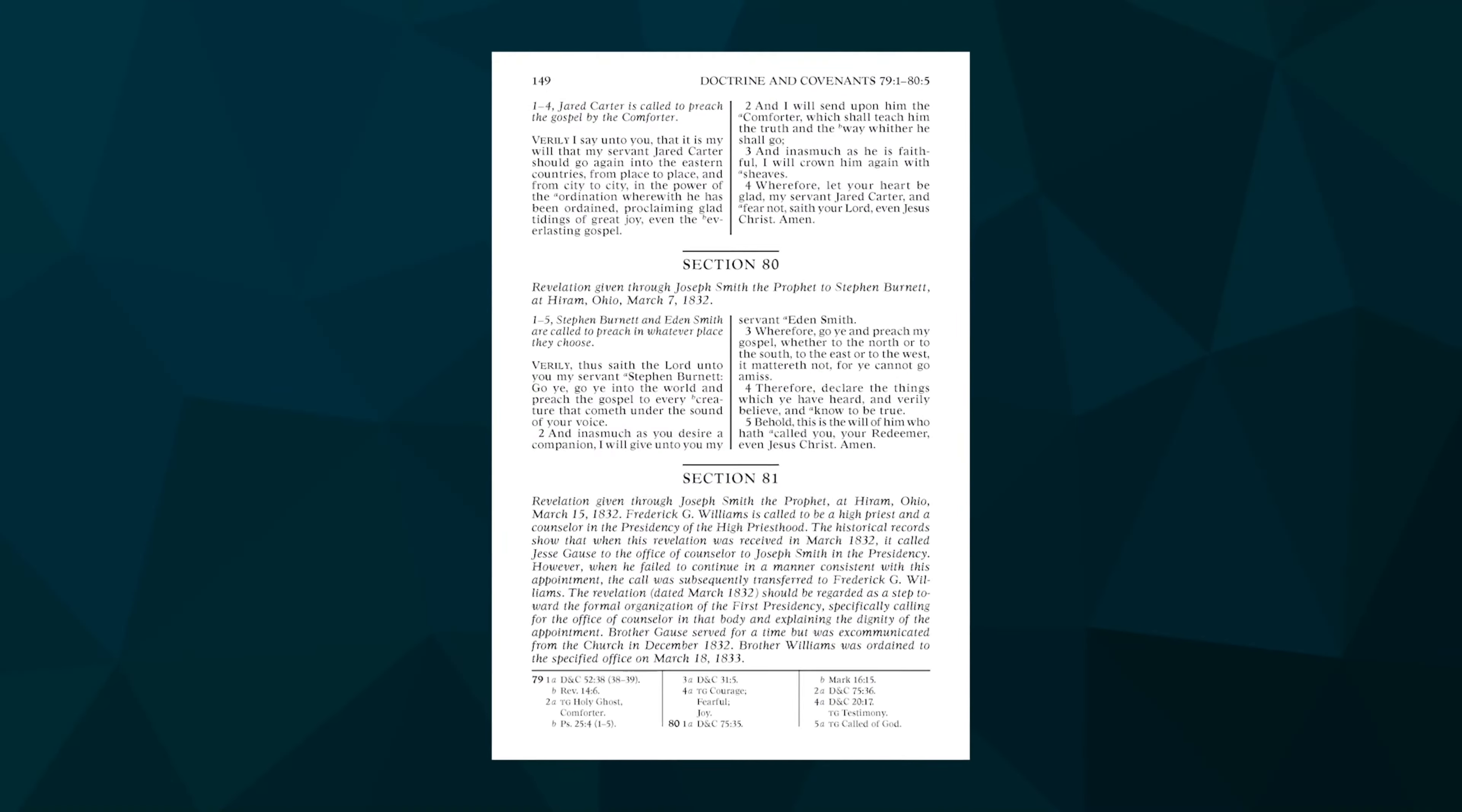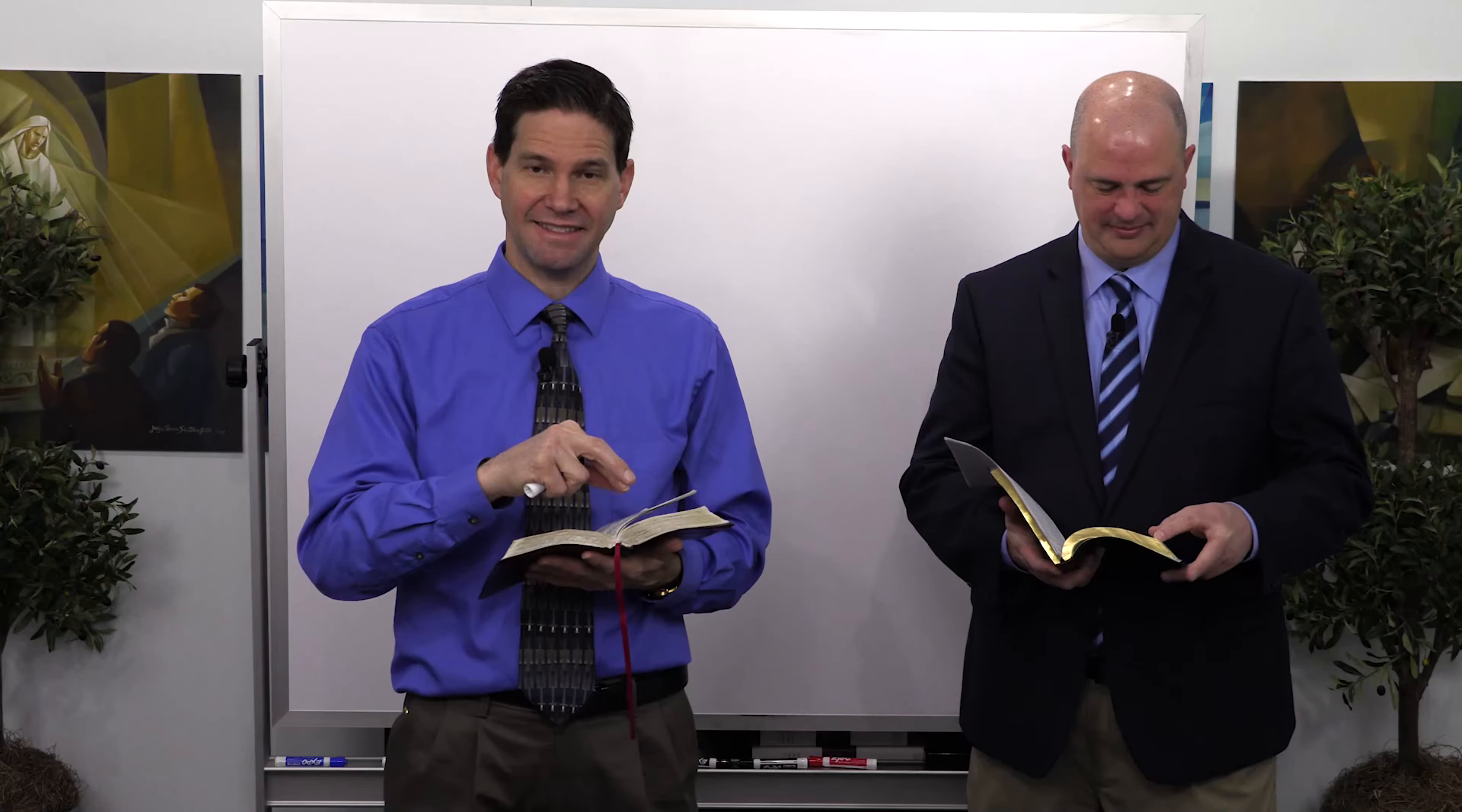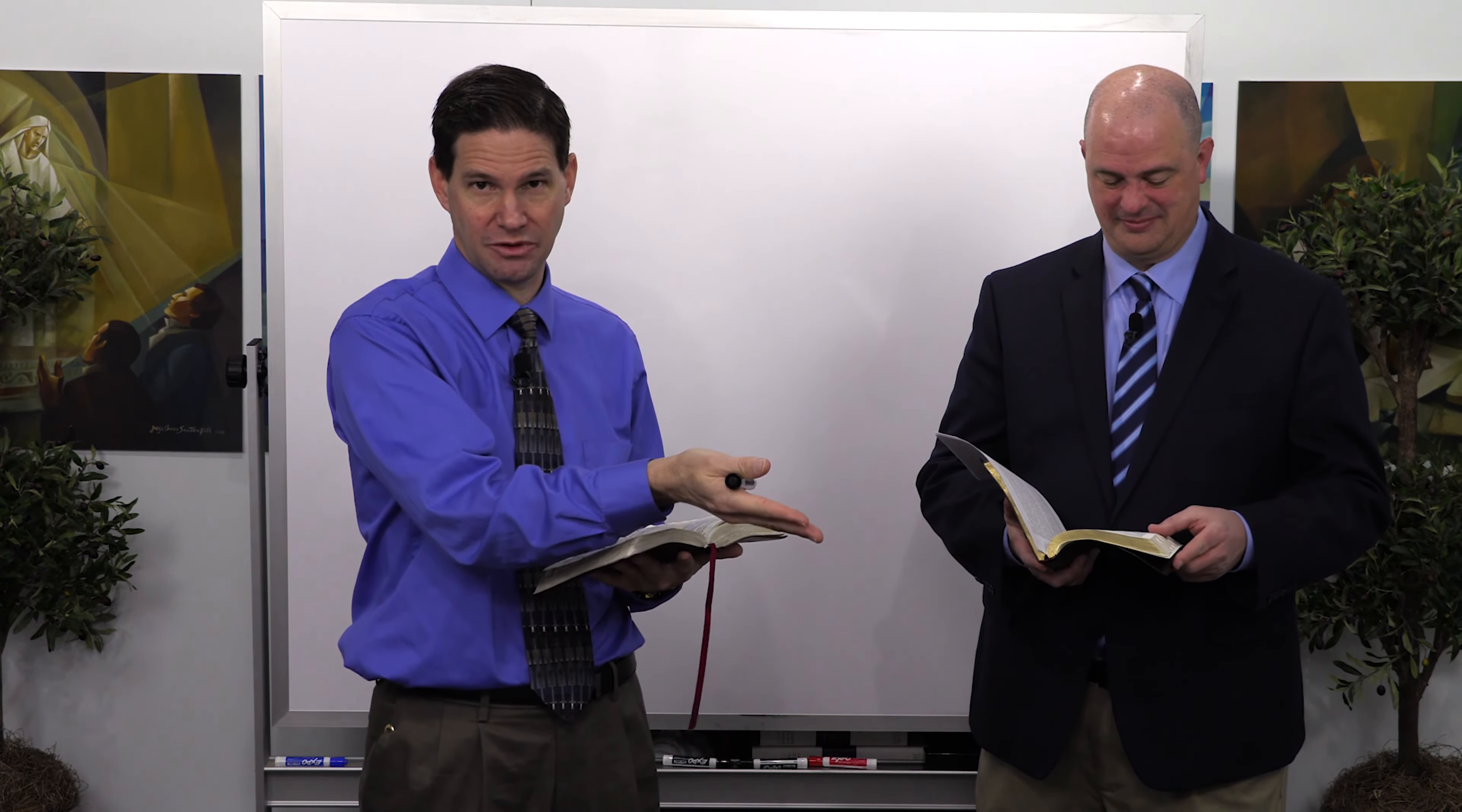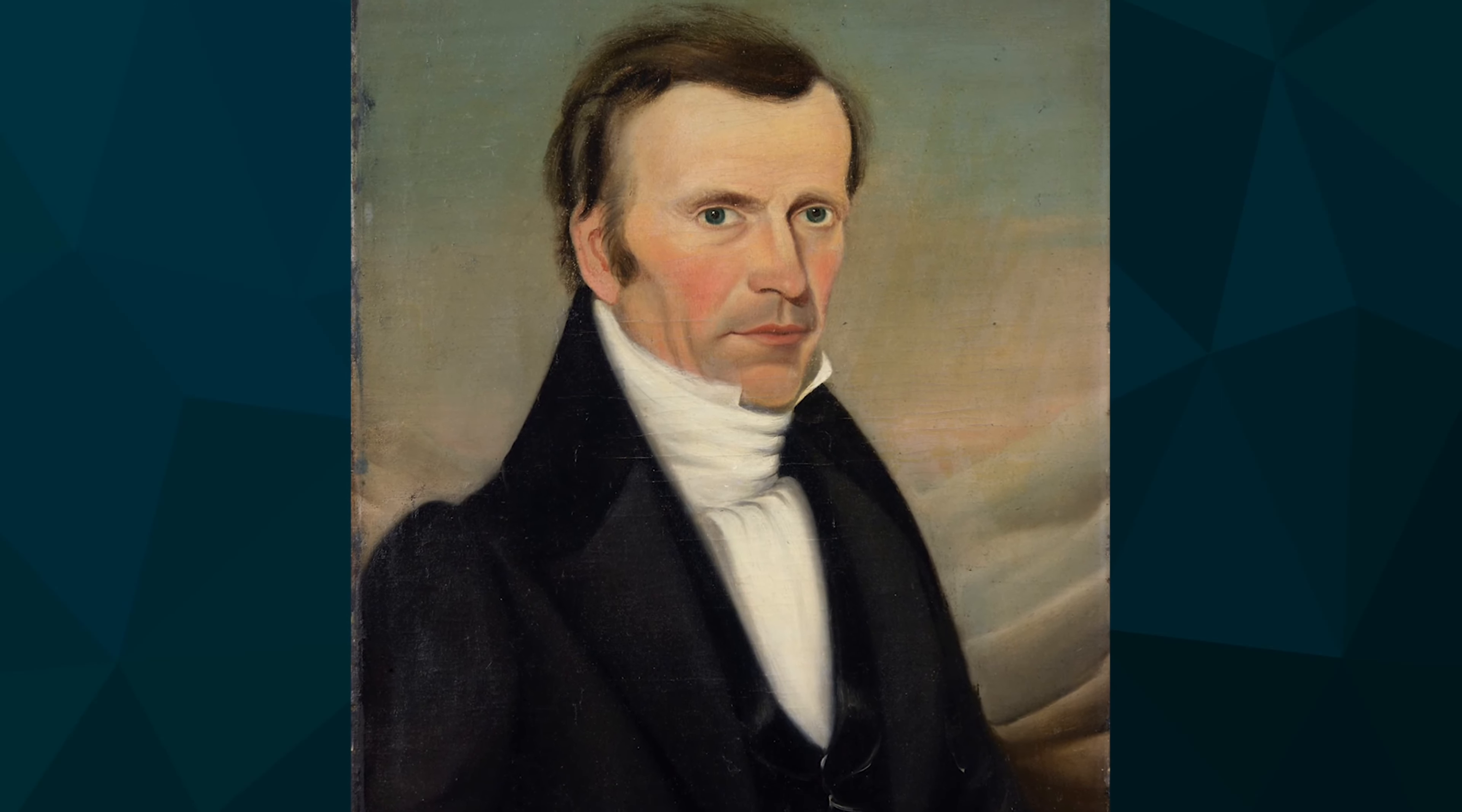Section 81 is a classic example of that, because what they did in the Revelations moving forward, they didn't change section 81 that was given specifically to Jesse Gauss to be a member of the First Presidency. They simply replaced his name with Frederick G. Williams. So the Church moved forward. Jesse was replaced.